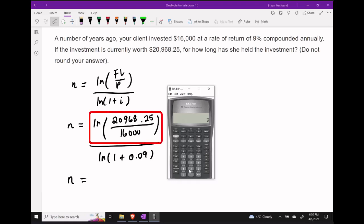So for instance, inside my numerator I'm going to start with my 20,968.25. I'm going to divide by 16,000 and then hit enter.